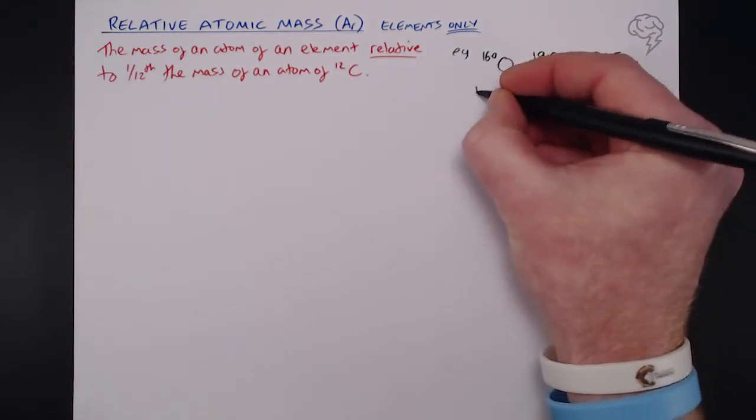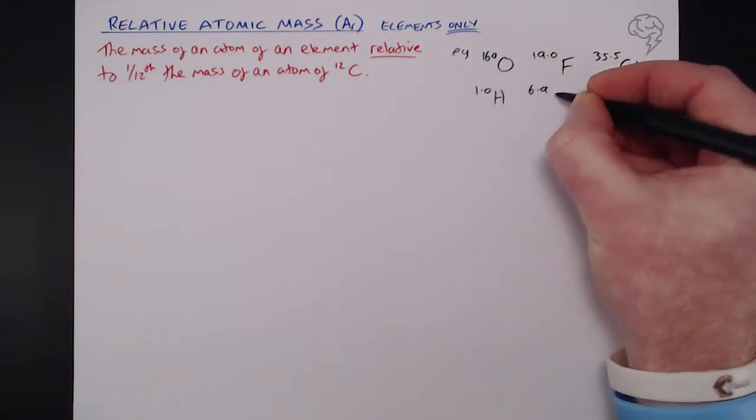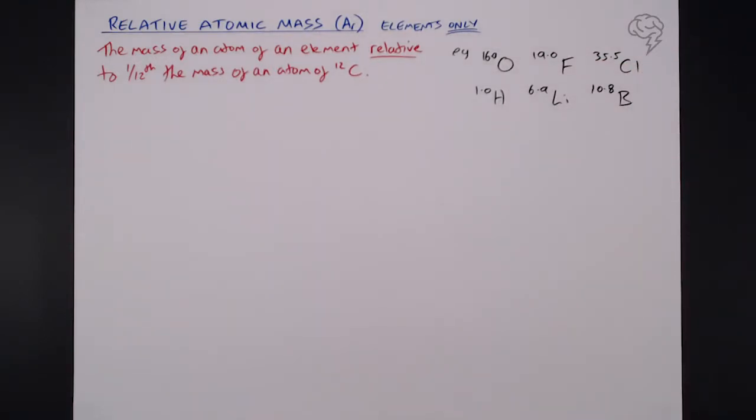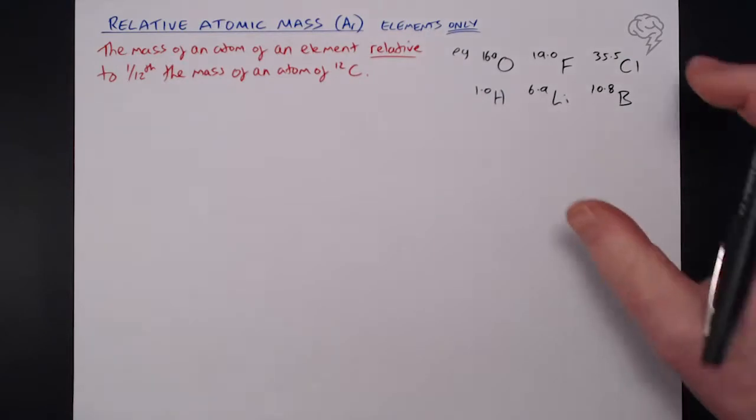Now, of course, lighter elements exist, such as hydrogen, which is 1, 6.9 for lithium, and 10.8 for boron. So you'll see these numbers in your periodic table, and they're there for you to refer to. You don't have to learn any of these, they are just there.